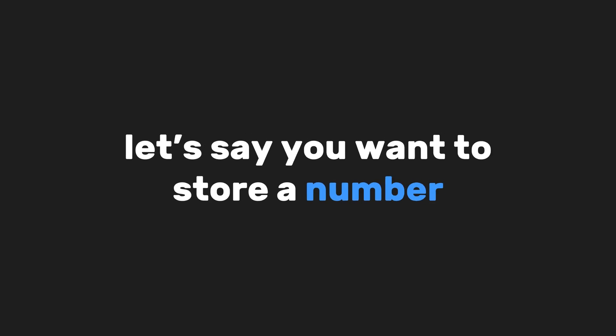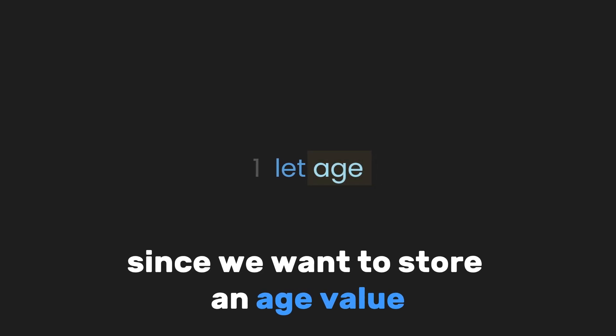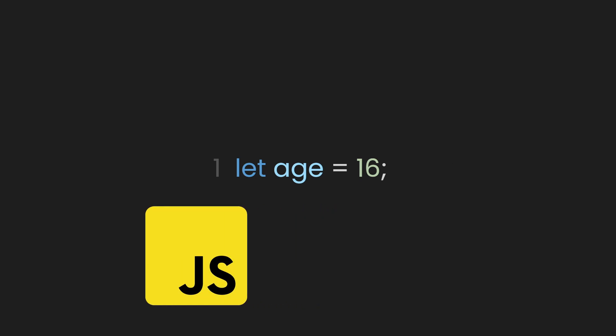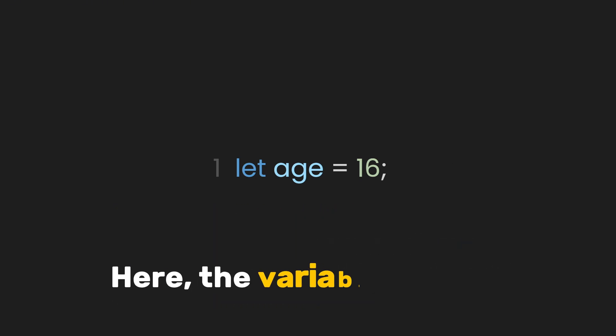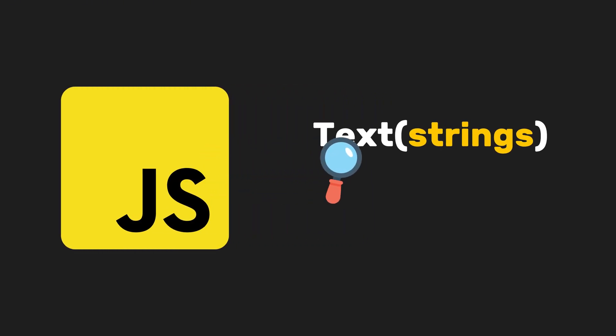For instance, let's say you want to store a number like an age. Just like we did earlier, let's declare a variable using the `let` keyword, name our variable `age`, then use the equal sign to assign a value — say 16 — and end the line with a semicolon. Here the variable's value is a number, and unlike a string like John, we don't need to wrap it in quotation marks. This helps JavaScript distinguish between text strings and numbers.